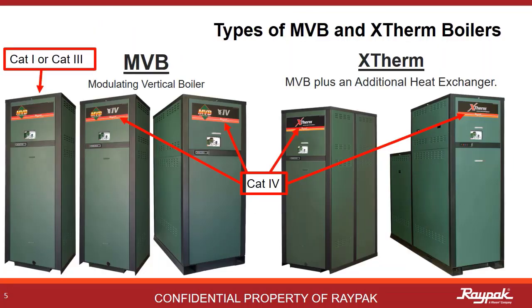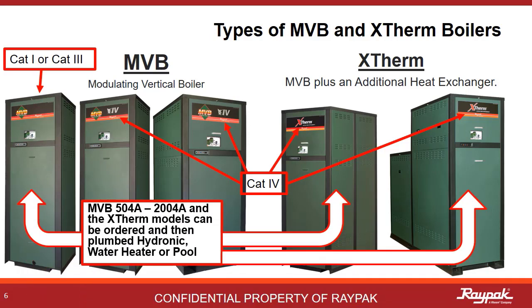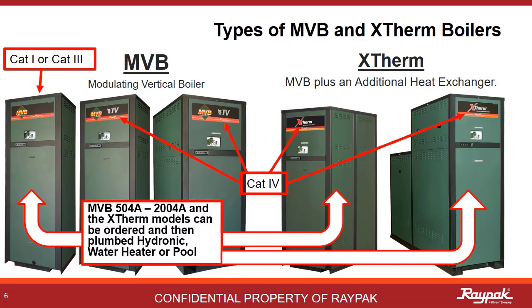It is important to know what kind of appliance you are installing. There is an ID card in each unit that specifies what kind of appliance it is. The Category 4 MVBs can only be ordered as a hydronic boiler or a water heater — they are not designed to be pool heaters. The Category 1 or Category 3 MVBs and Category 4 X-Therm appliances can be ordered as a hydronic heater, water heater, or pool heater. Note the wording: ordered and then plumbed. You cannot swap the heater type in the field.